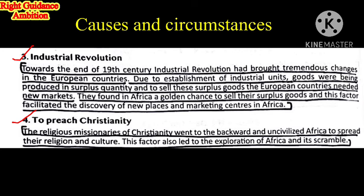Fourth point: To Preach Christianity. The religious missionaries of Christianity went to the backward and uncivilized Africa to spread their religion and culture. They thought the African continent was very uncivilized with backward people, and they could spread Christianity and convert people there. This factor led to the exploration of Africa and its scramble, resulting in new places being discovered on the African continent.